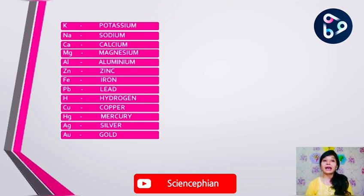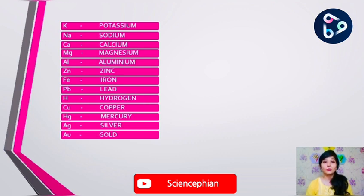The reactivity series goes like this: potassium, sodium, calcium, magnesium, aluminium, zinc, iron, lead, hydrogen, copper, mercury, silver, and gold.